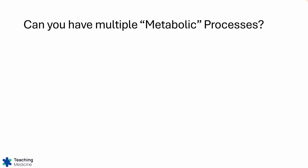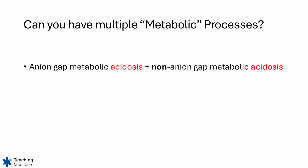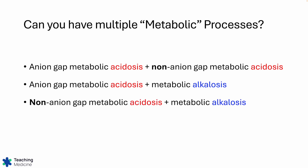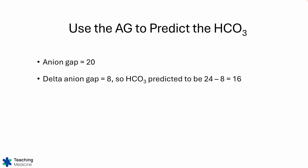Can you have multiple metabolic processes happening at the same time? Yes. You could have an anion gap and a non-anion gap metabolic acidosis together, or a metabolic acidosis with a metabolic alkalosis — with anion gap or non-anion gap. These are the three different combinations, and we're going to look at how to recognize when this is happening.